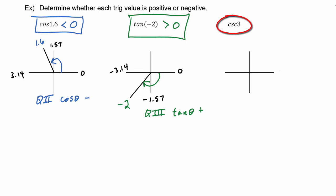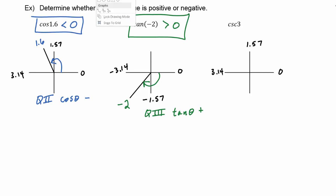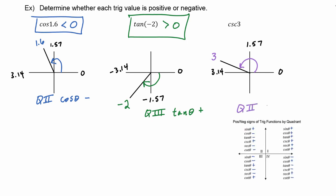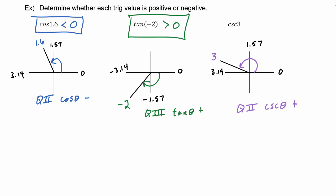For cosecant of 3, we label in the positive direction: 0, 1.57, 3.14. Theta equals 3 lives just before 3.14, placing it in quadrant 2. In quadrant 2, cosecant of an angle is positive, so cosecant of 3 is greater than zero.